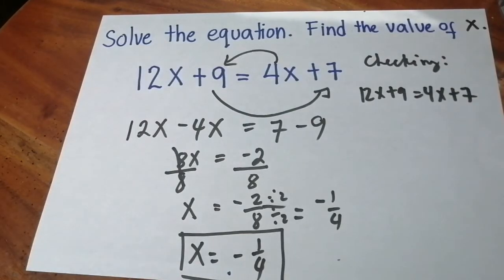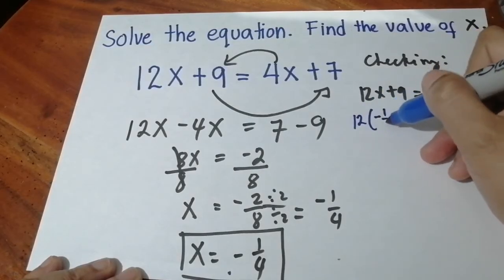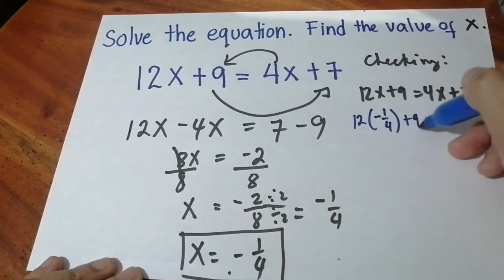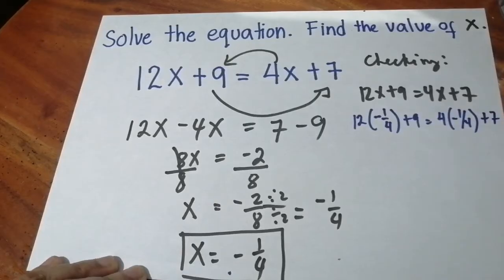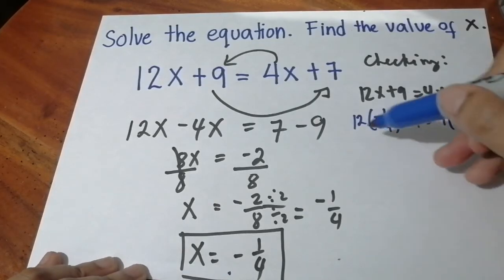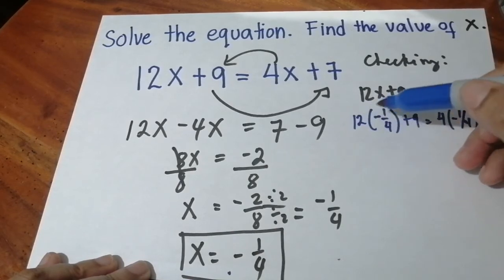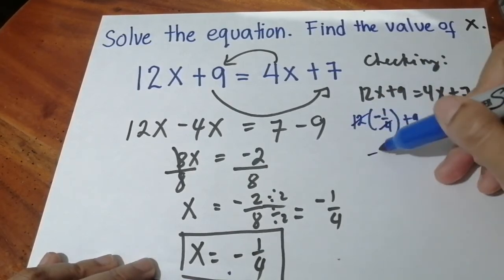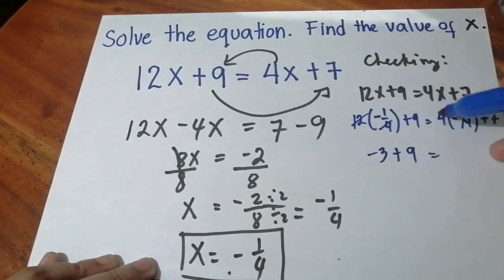Substituting the value of x, we get 12 times negative 1/4 plus 9 equals 4 times negative 1/4 plus 7. Positive 12 times negative 1/4 will be negative 3 plus 9. Cancel, cancel, we get negative 1 plus 7.